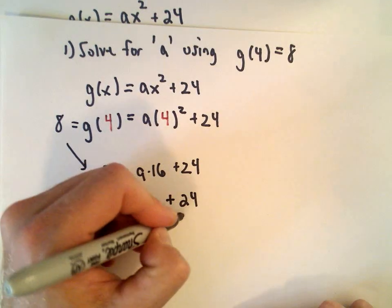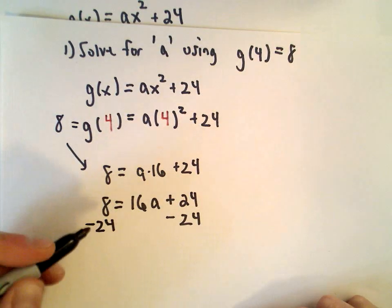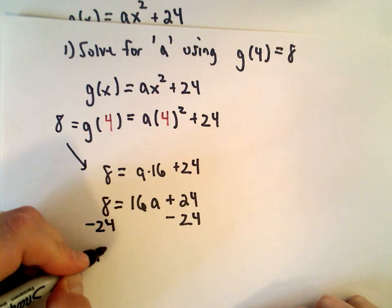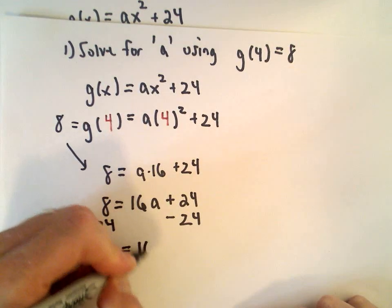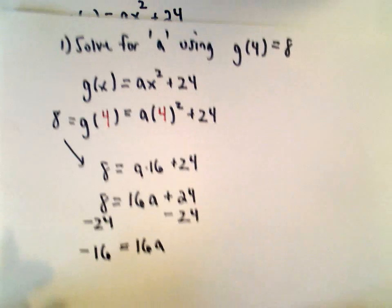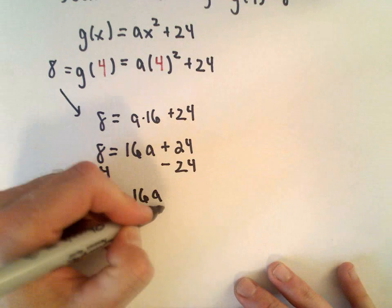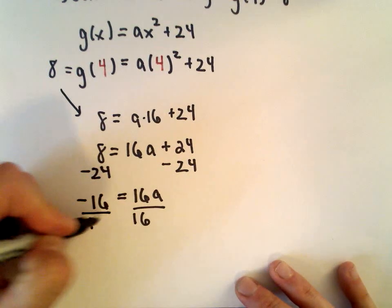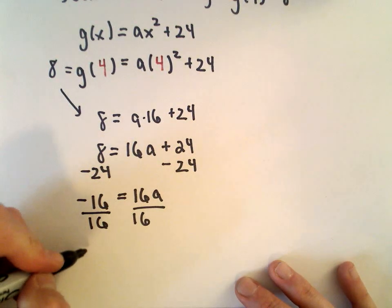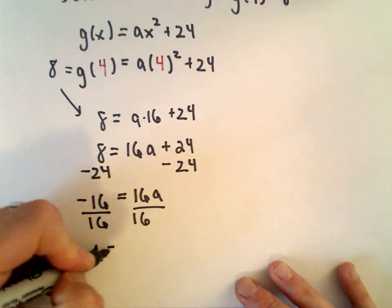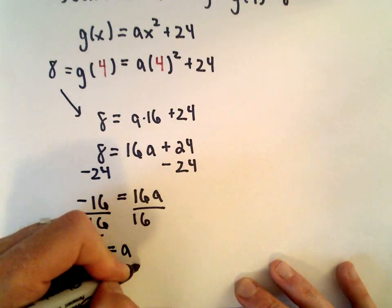So we can subtract 24 from both sides. 8 minus 24 is going to be -16. That's going to equal 16 multiplied by a. And now to solve for a, we can just divide both sides by 16. So -16 divided by positive 16 is going to leave us with -1, and that's going to be our value for a.